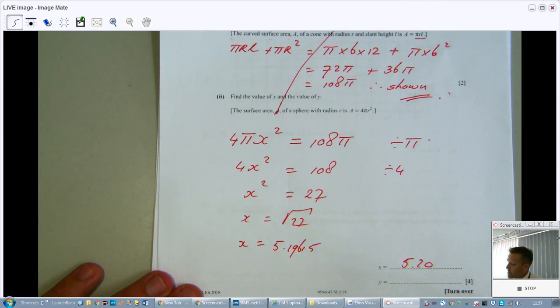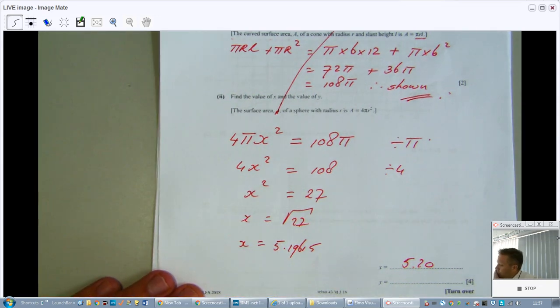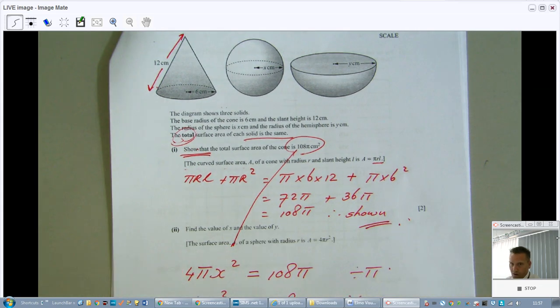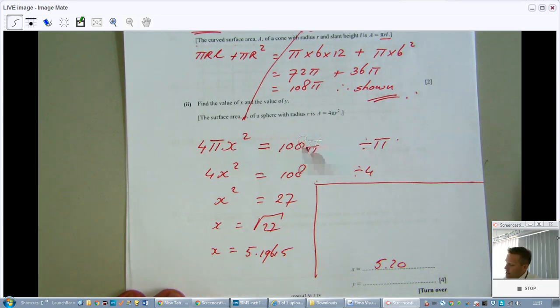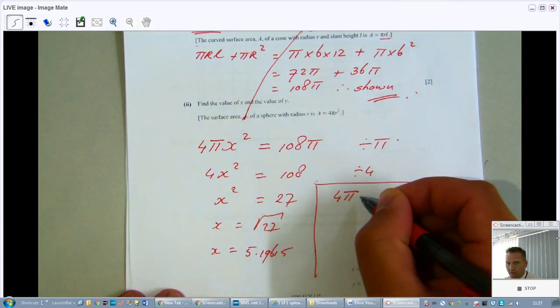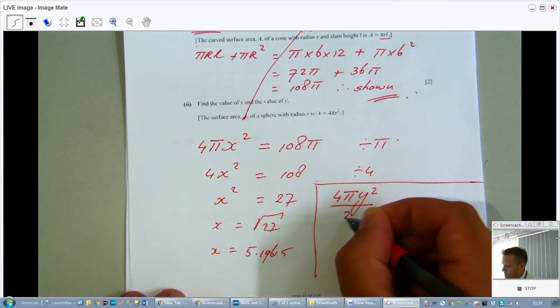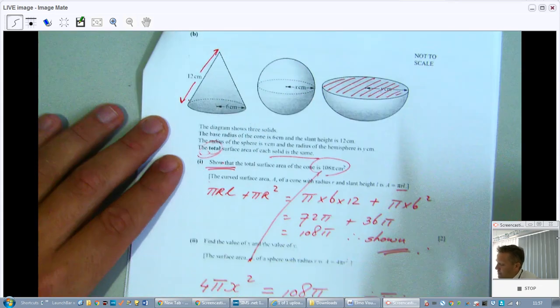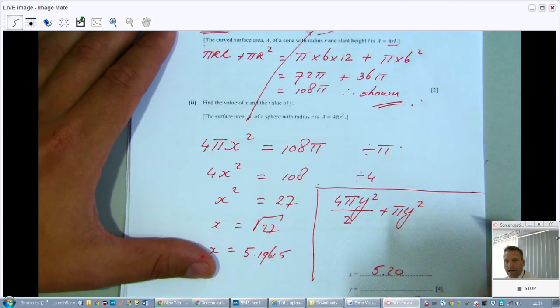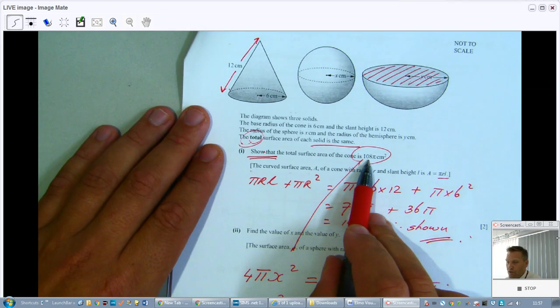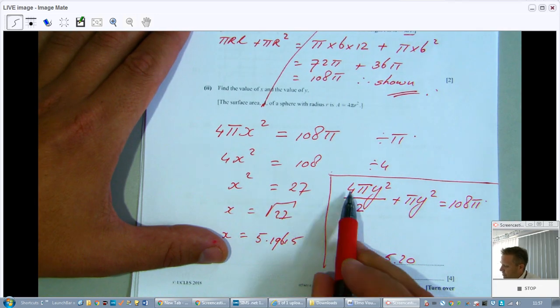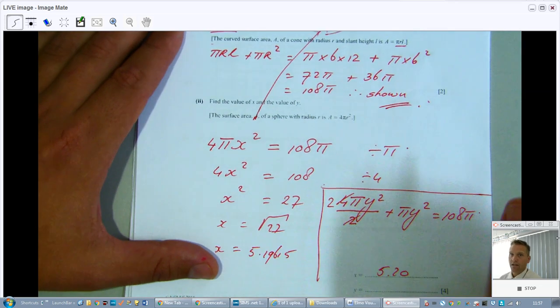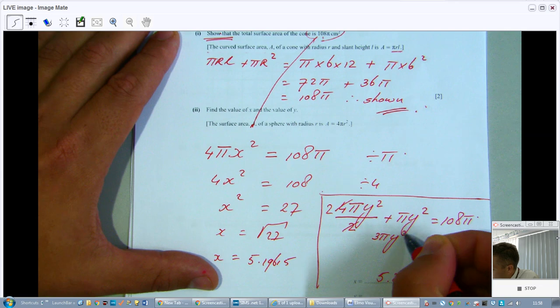Then to find y. Interesting, because y is a hemisphere, right, half a sphere. So to find the area of half a sphere, that would be 4 pi r squared, so 4 pi y squared divided by 2. Can you agree with that? Because it's half a sphere, but you have now added another surface to it, so you're going to say plus pi r squared. And again, r is the same as y, and that also equals 108 pi. Can we follow me? Okay, so 4 divided by 2 is 2, so you've got 2 pi y squared plus 1 pi y squared, so that is actually 3 pi y squared equals 108 pi.